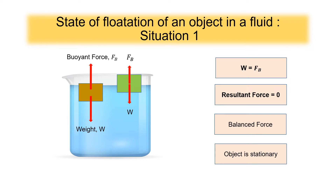As we can see, the brown and green objects are submerged partially and fully in the water. Why are they different? It is because the density of the objects is different. If an object is less dense, it will float partially, like the green one. If the object is more dense, it will float fully submerged in the water.